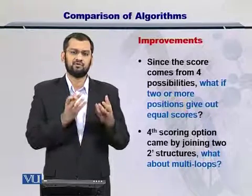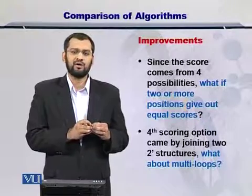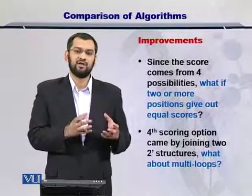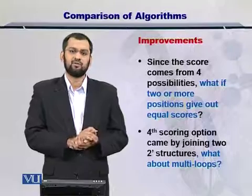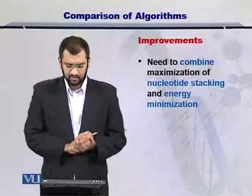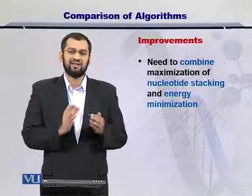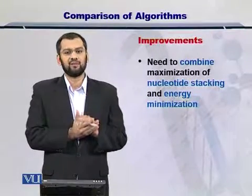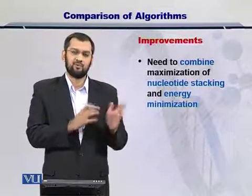The fourth scoring possibility gives you a combination of two secondary structures coming together in the prediction. However, what about multi-loops, which have three or more RNA structures coming together? This can also be a major improvement in this algorithm. Moreover, an optimal strategy would be to combine the energy-based algorithms as well as the nucleotide coupling algorithms — that will be taking the best from both worlds.